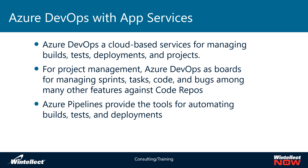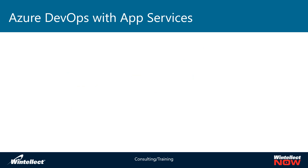We're focusing on builds and deployments today, not tests, but you can integrate tests into your pipelines and get a full-blown pipeline from checking code into a repository all the way through deploying to a production environment — all automated using Azure DevOps. In a previous video we looked at using App Services with GitHub for deployments; today we're specifically focusing on DevOps.